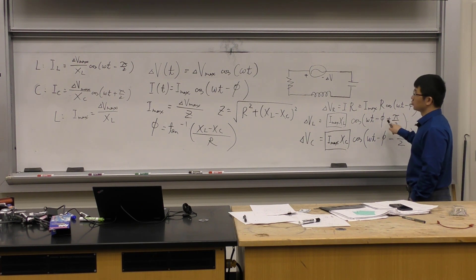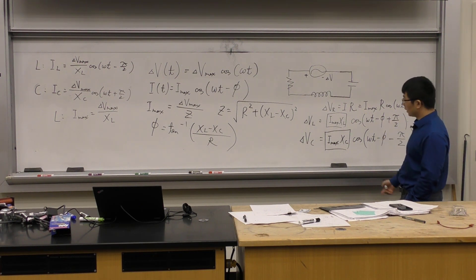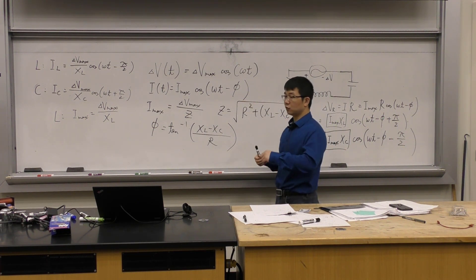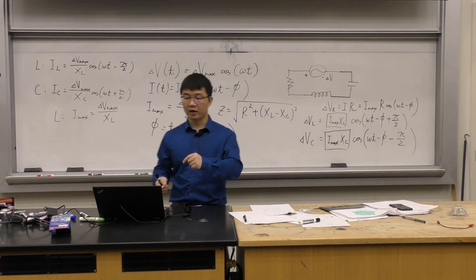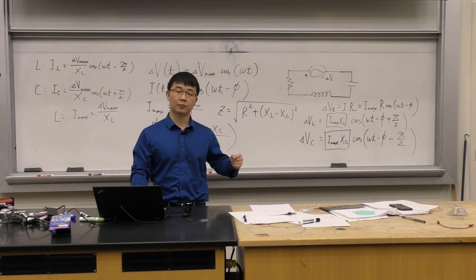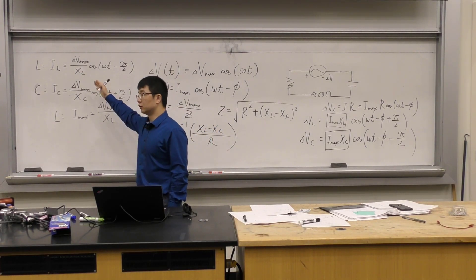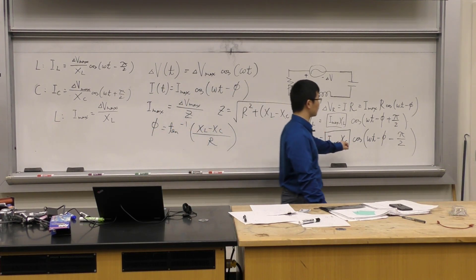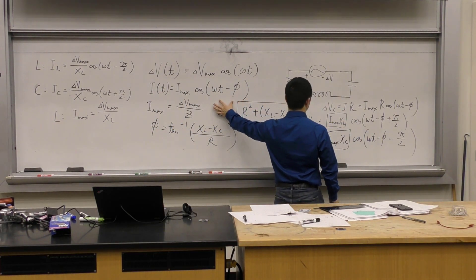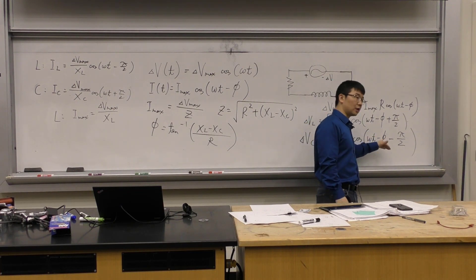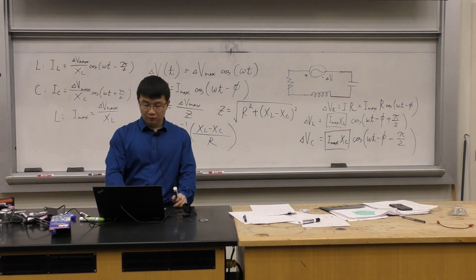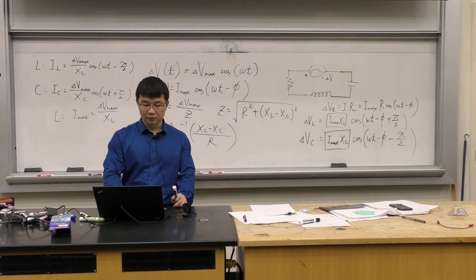The voltage function is still a cosine function. You use the relationship between current and voltage — one is ahead, the other is behind — applying the theory for inductors and capacitors. The cosine function will be the current's cosine plus or minus one-half pi.